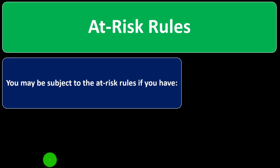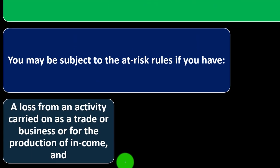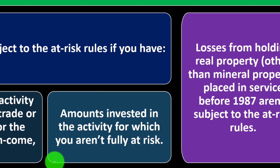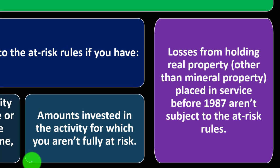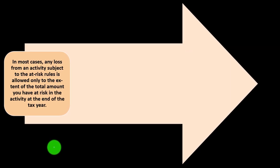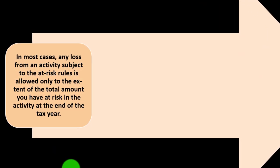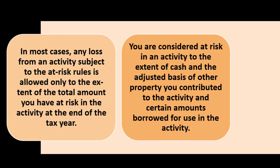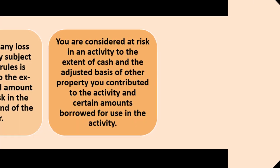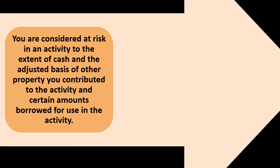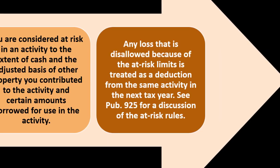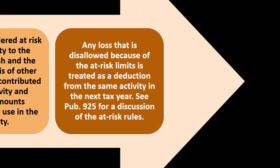At-risk rules: you may be subject to these rules if you have a loss from an activity carried on as a trade or business or for the production of income, and amounts invested in the activity for which you aren't fully at risk. In most cases, any loss from an activity subject to at-risk rules is allowed only to the extent of the total amount you have at risk at the end of the year. Any loss disallowed because of at-risk limits is treated as a deduction from the same activity in the next tax year.